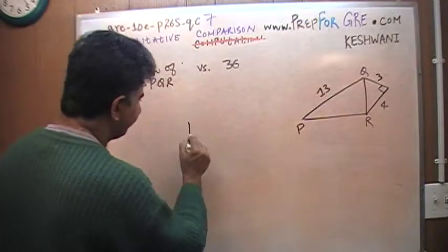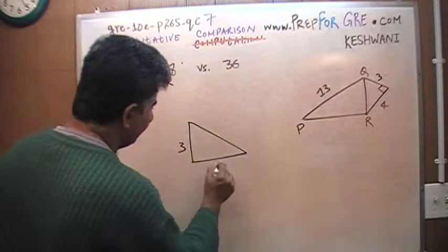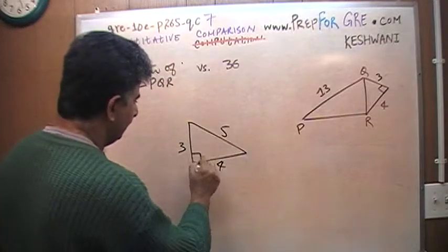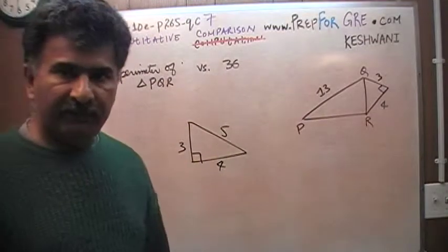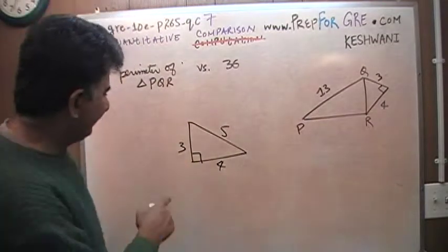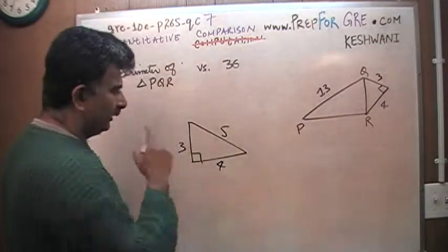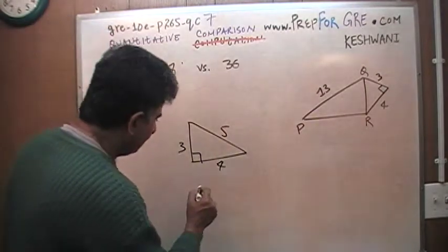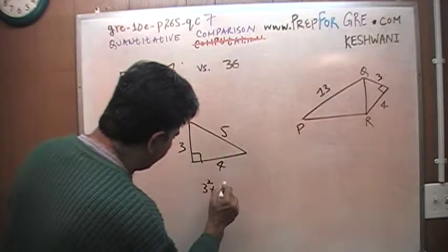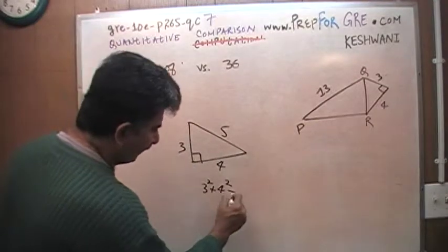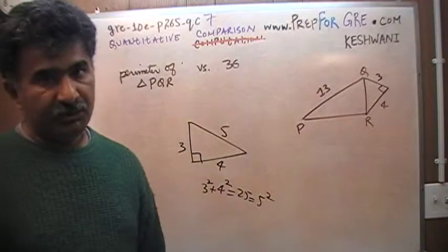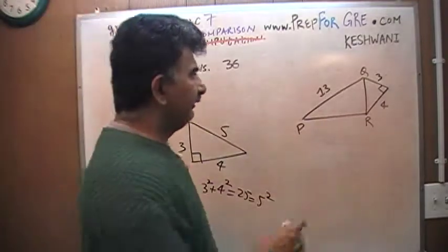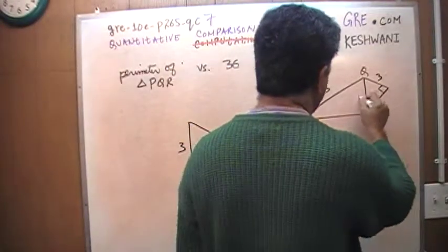There are two very commonly appearing triangles on the exam. One is what is known as a 3-4-5 triangle. It applies only to a right angle triangle, obviously. A 3-4-5 triangle is so called because if one side is 3 and the other side is 4, then hypotenuse always works out to be 5. Why? Because 3 squared plus 4 squared is 9 plus 16 which is 25, which of course is 5 squared. And had you known that part, you would have immediately seen that this is 3 and this is 4, therefore the missing side is 5.